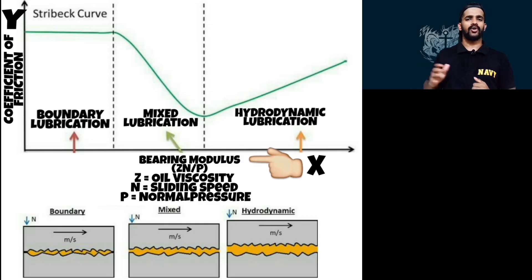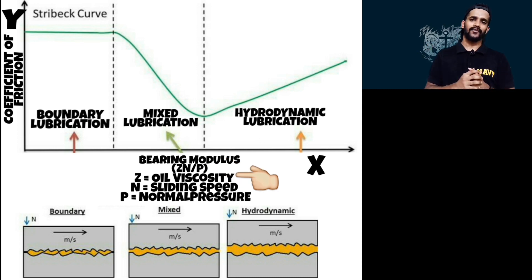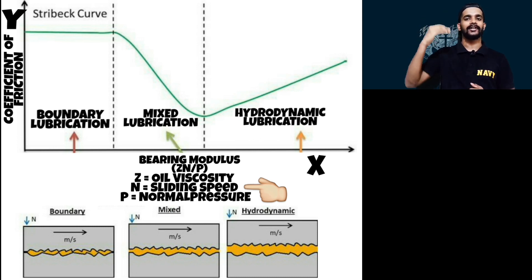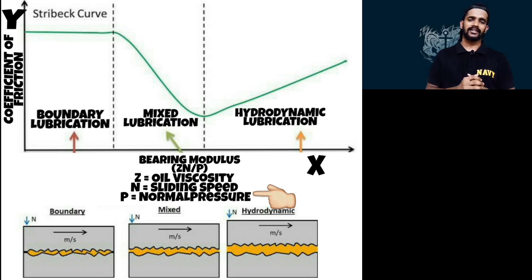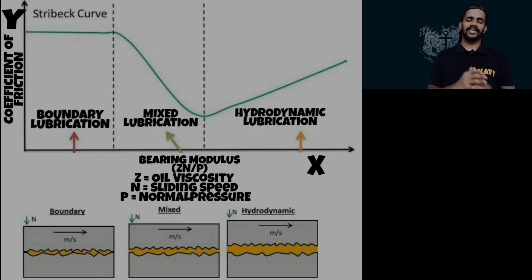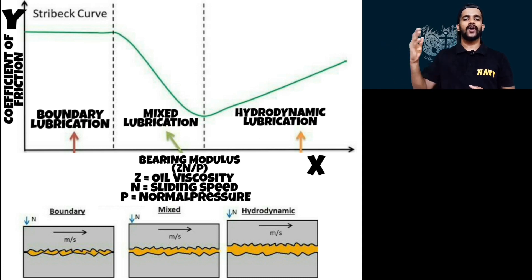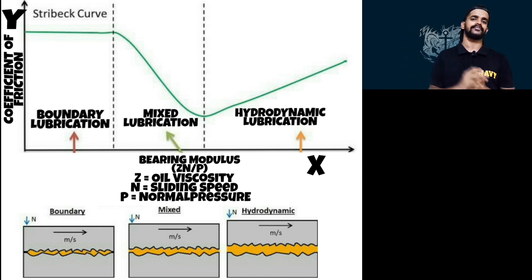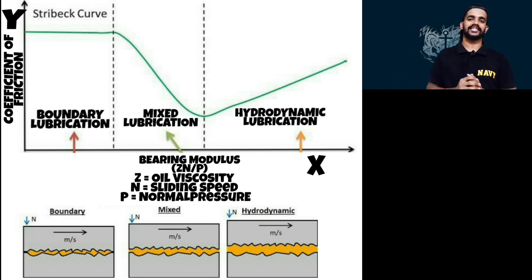Now, talking about the bearing modulus — our x-axis — represented as Z·N divided by P. Z is the viscosity of the lubricant, N is the sliding speed (in our case, the speed of the piston moving from TDC to BDC), and P is the normal pressure, that is force per unit area — the pressure pressing on the moving part. From the graph, when the bearing modulus keeps on decreasing, the coefficient of friction keeps on increasing, and as the bearing modulus increases, the coefficient of friction reduces. They are indirectly proportional to each other.